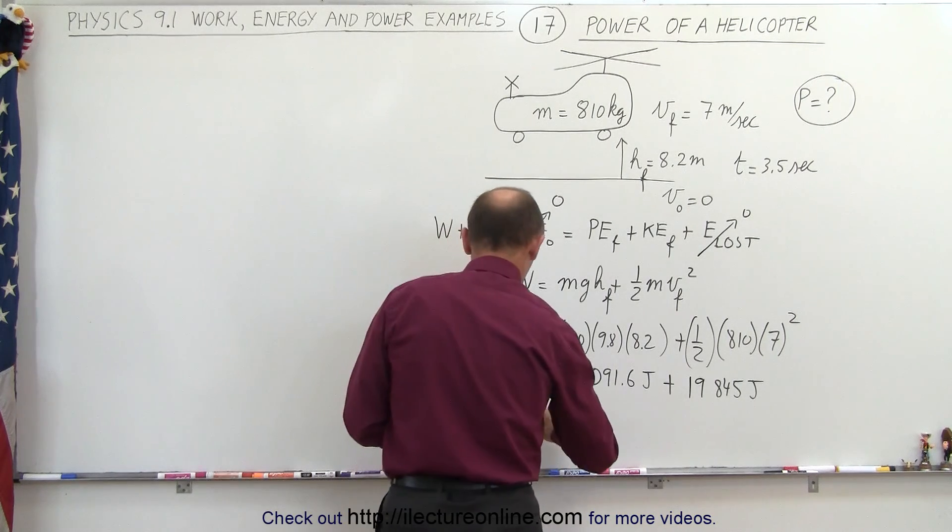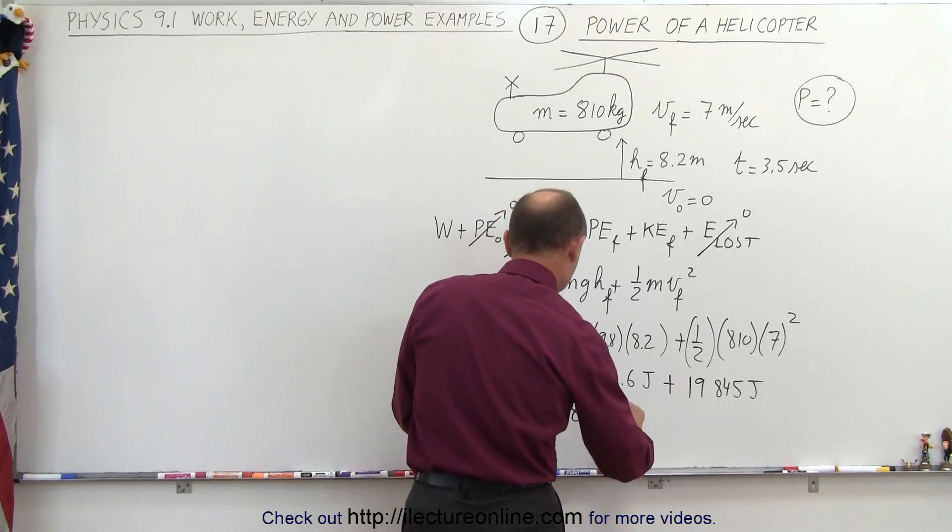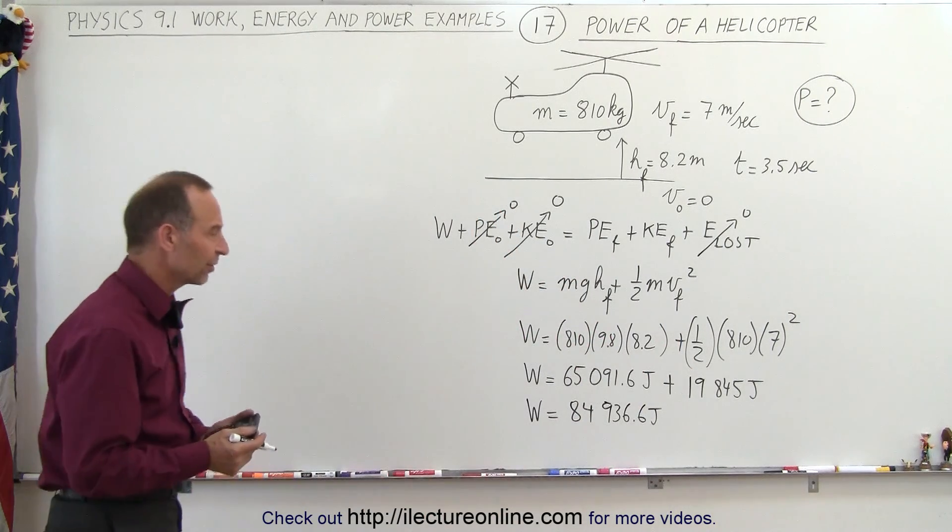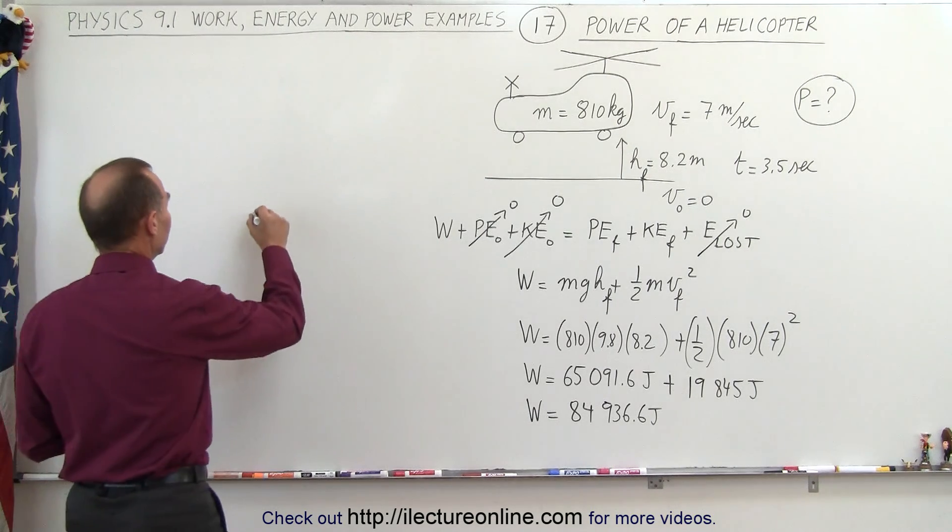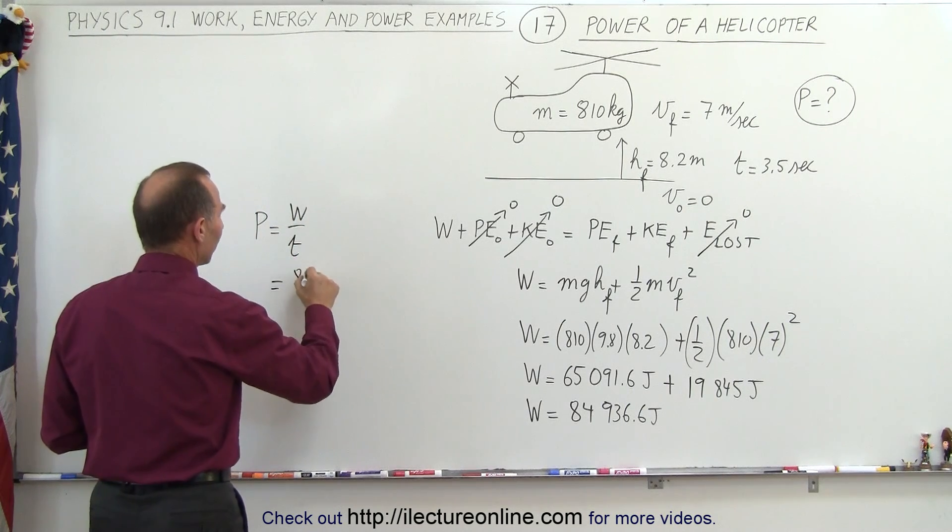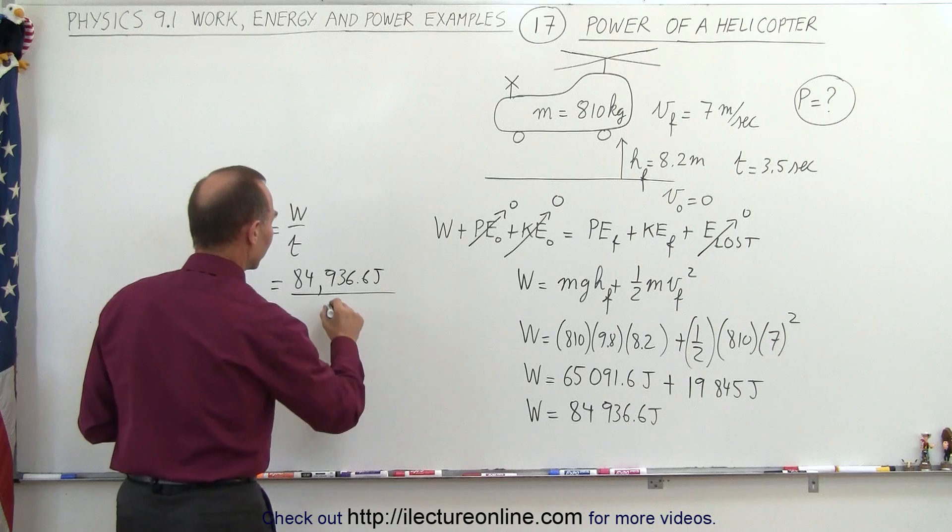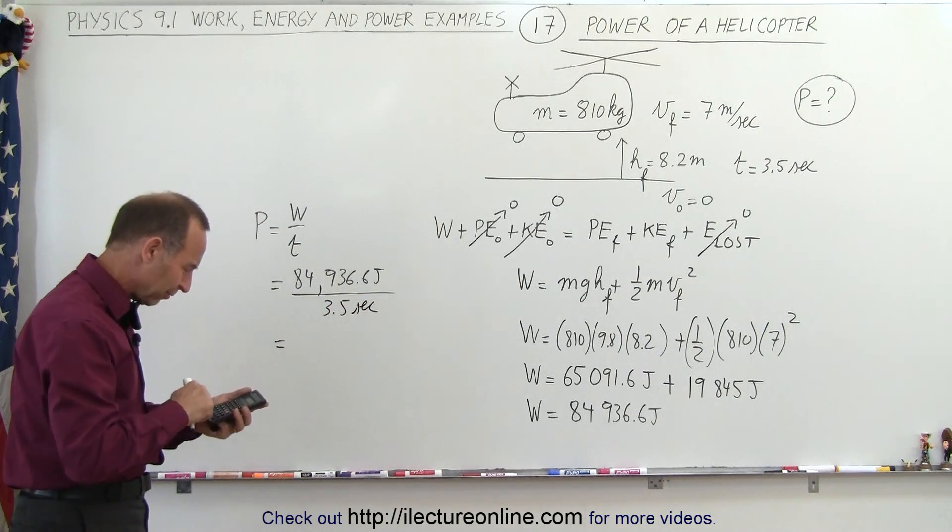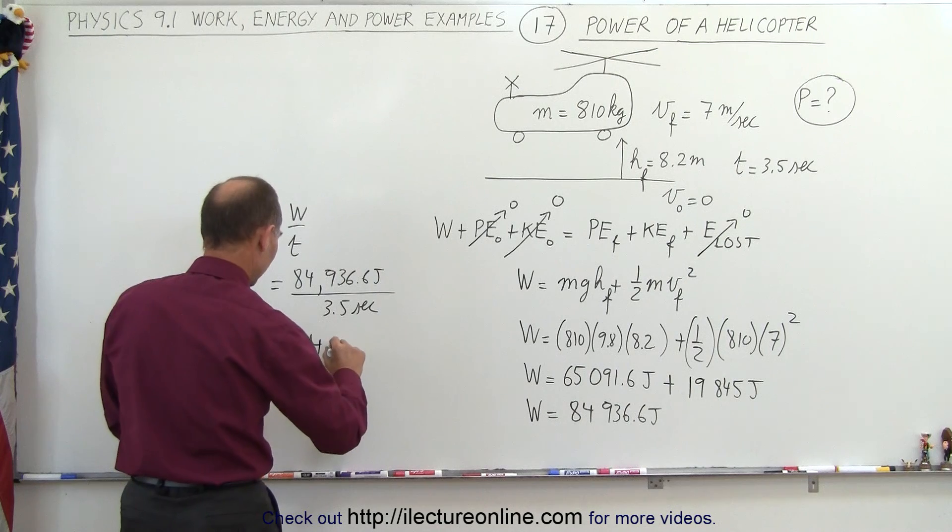So we have the amount of work done is equal to 84,936.6 joules. Again, we're keeping a bunch of extra significant figures. Now, they're not asking for work done, they're asking for power. But power, by definition, is equal to work done divided by time. So in this case, the work done 84,936.6 joules divided by the time spent of 3.5 seconds. So divide this by 3.5, and we get about 24,270 watts.